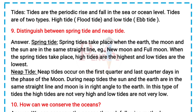Tides: Tides are the periodic rise and fall in the sea or ocean level. Tides are of two types: high tide and low tide. 9. Distinguish between spring tide and neap tide.